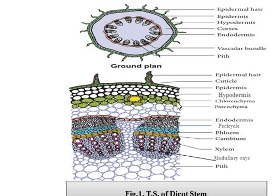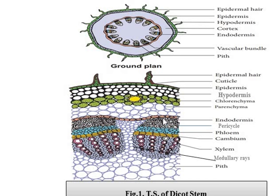After hypodermis, there are several layers below which are parenchymatous in nature and they are all called cortex. Under hypodermis, there is a cellular region called chlorenchymatous and parenchymatous. When cortical cells are parenchymatous in nature and contain chloroplasts, we call it chlorenchymatous. When chloroplasts are absent, we call them parenchymatous cells. After that, we have a pink-colored cell layer called endodermis, which is the innermost layer of the cortex. These cells are barrel-shaped and contain starch grains, which is why this layer is also called the starch sheath.